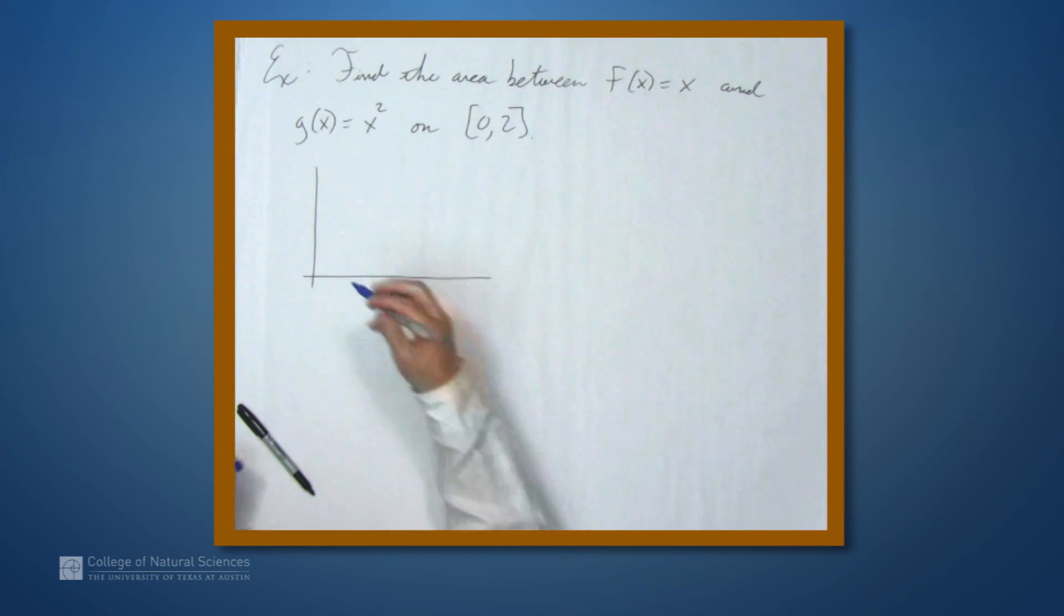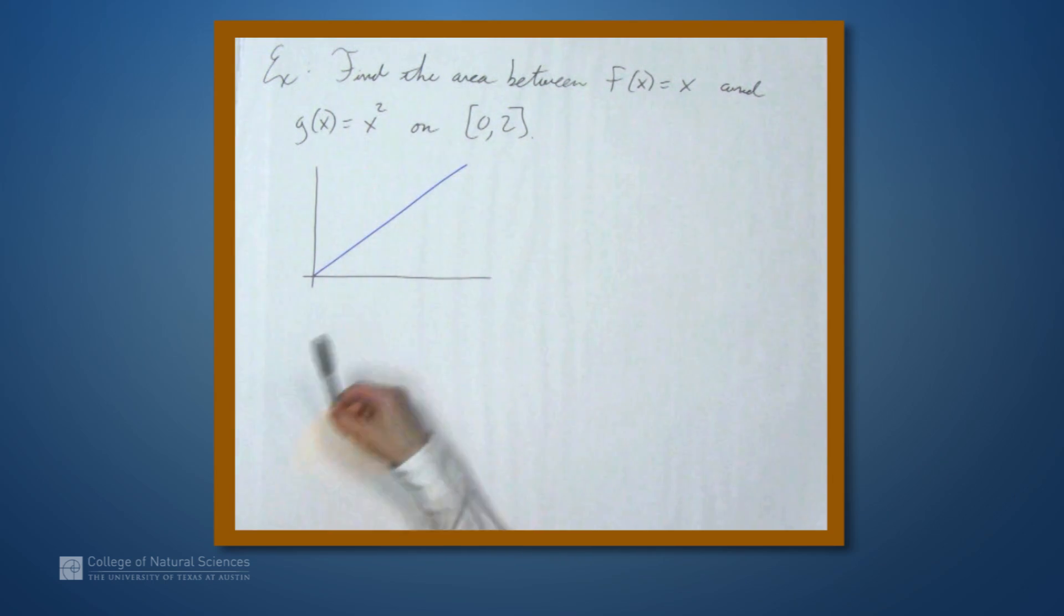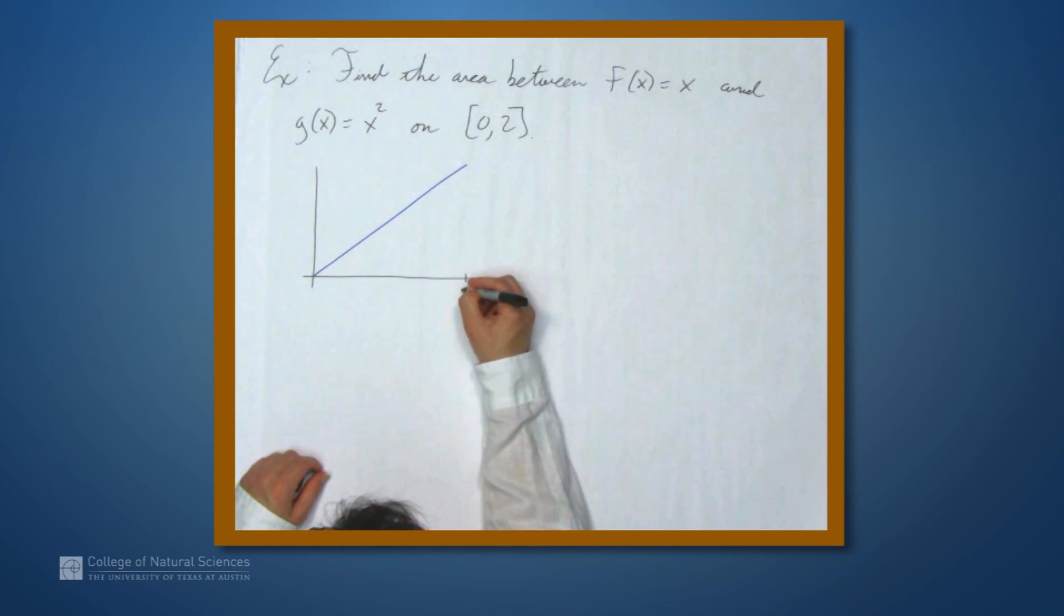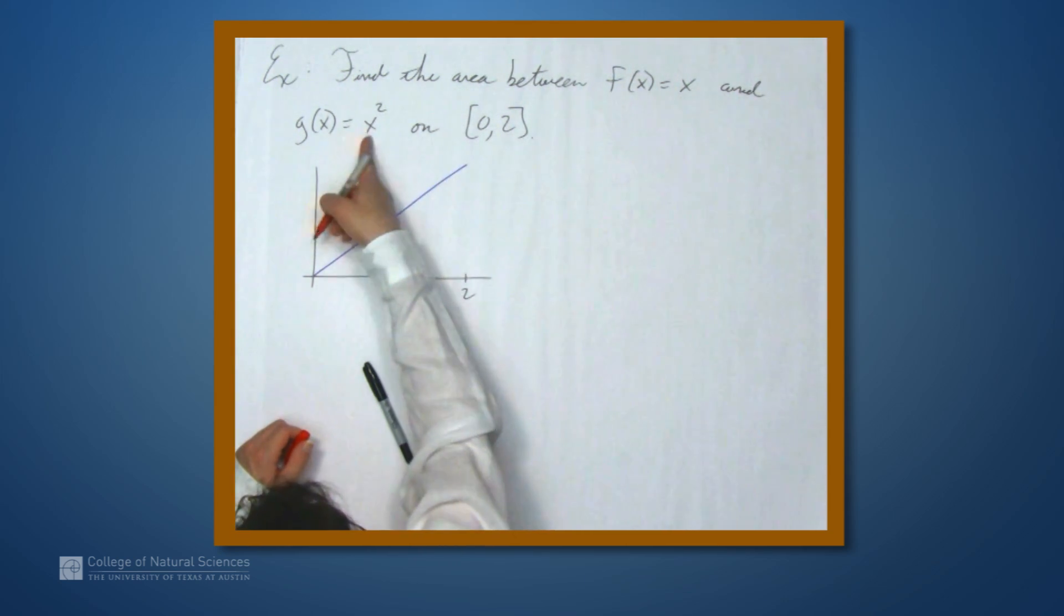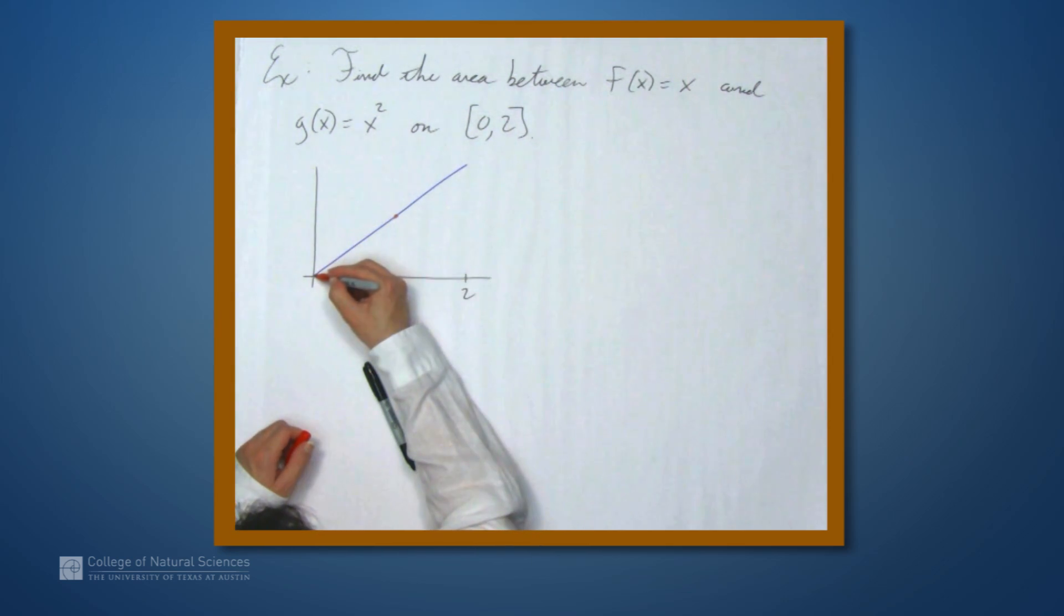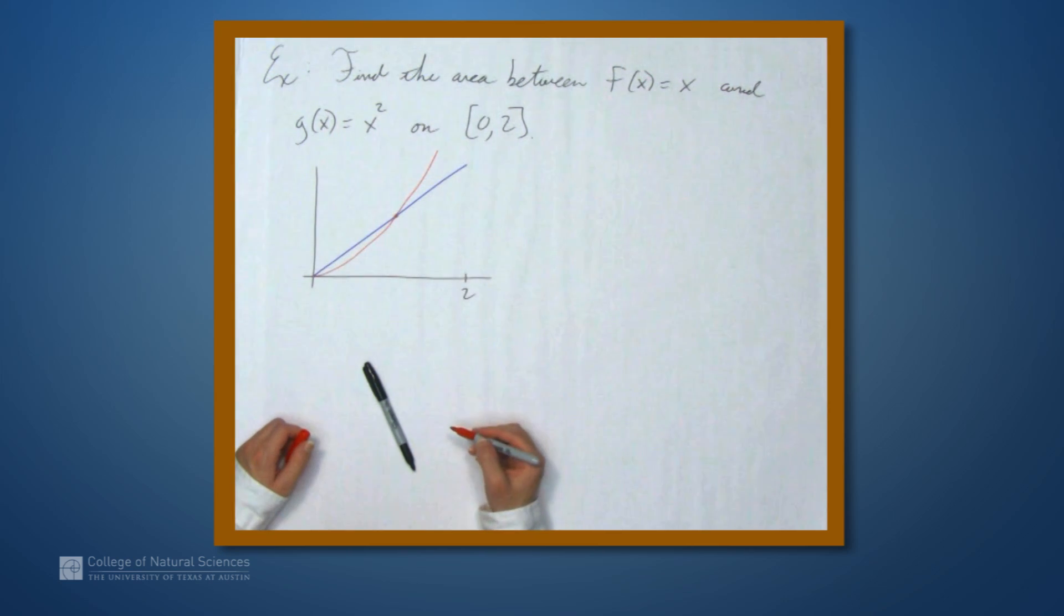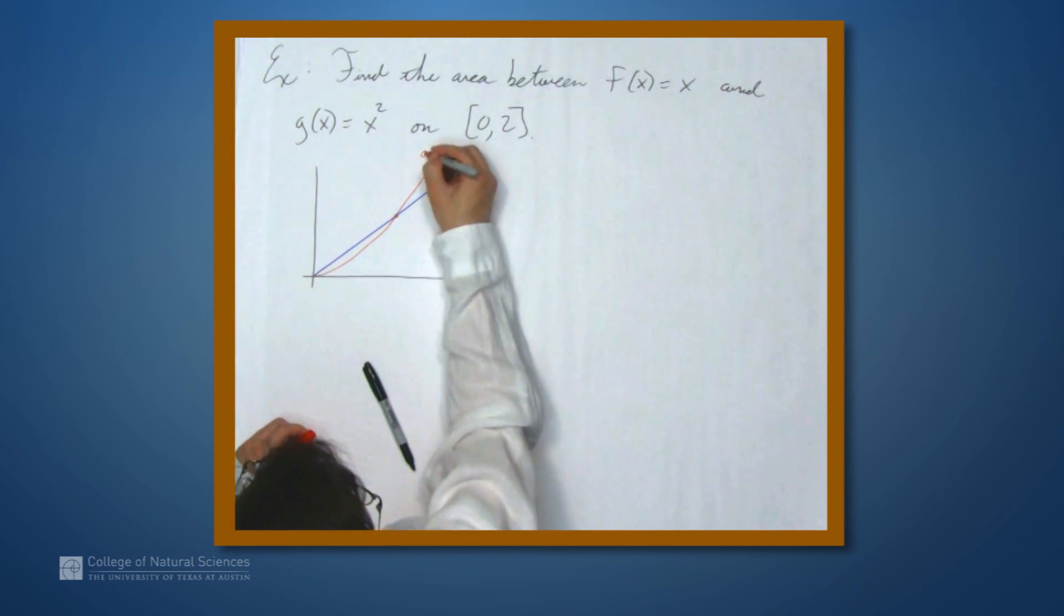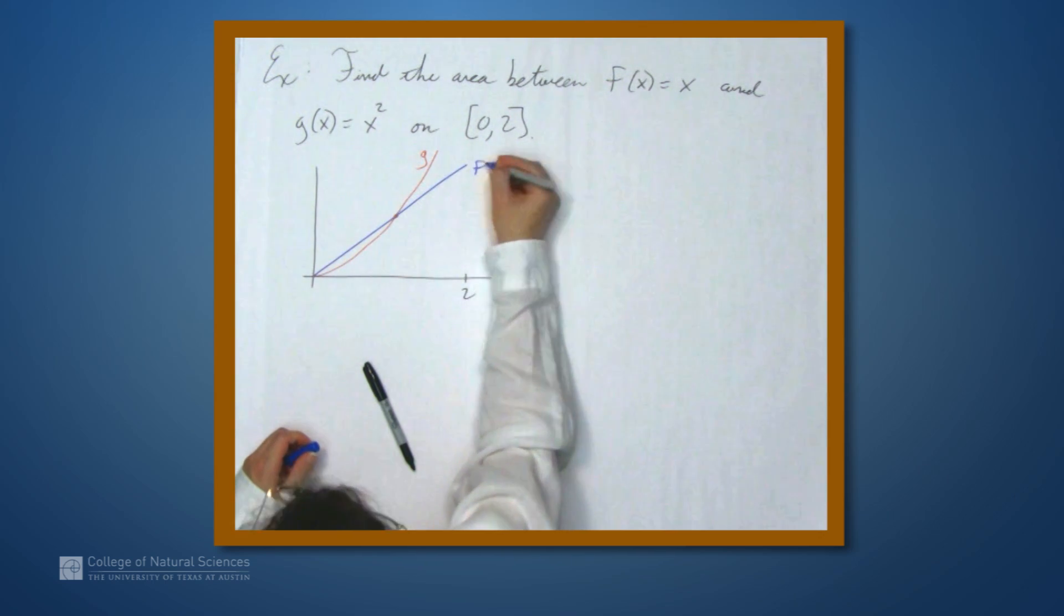So now we have f of x equals x. Oh, that's not quite 45 degrees, but that's all right. And let's say this is 2. Let's say this is 2. But now, g of x is going to intersect f here. Let's say that's 1. It's going to go up like this, and then it's going to be above f. So this is g, and this is f.